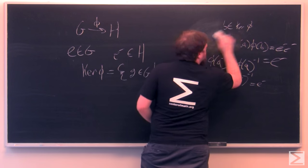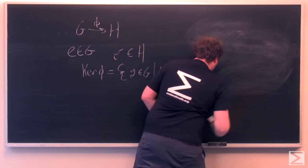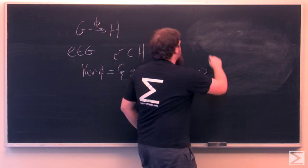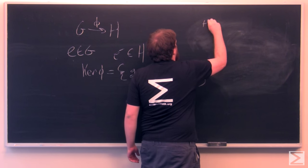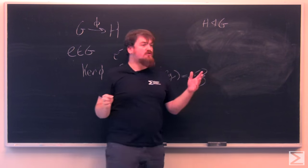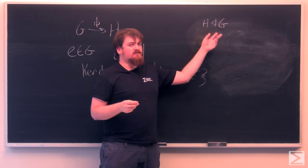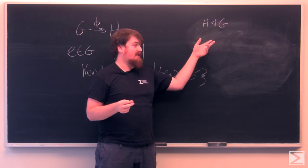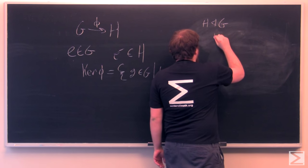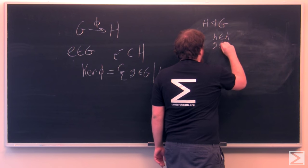Another useful property of the kernel is that the kernel is a normal subgroup. What this means is that if H is a normal subgroup of G, we write H with this symbol which looks a bit like a triangle and a less than symbol. This means that for all H in H and G in G, the conjugation of H by G is in H.